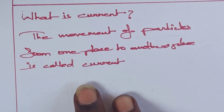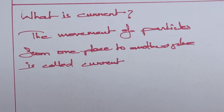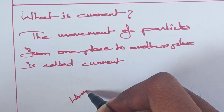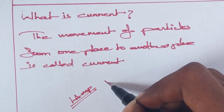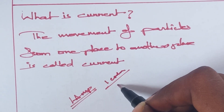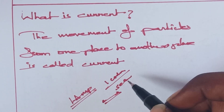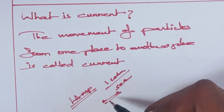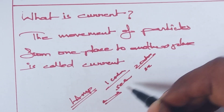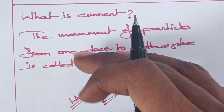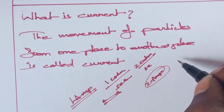Simply put, the mobility of electrons in a circuit is known as electric current. The movement of electrons is current. So here, what is one amp? One coulomb of electrons moving in a circuit per second from one place to another is considered to be one amp. In case two coulombs of electrons move in a circuit per second, we get two amps.